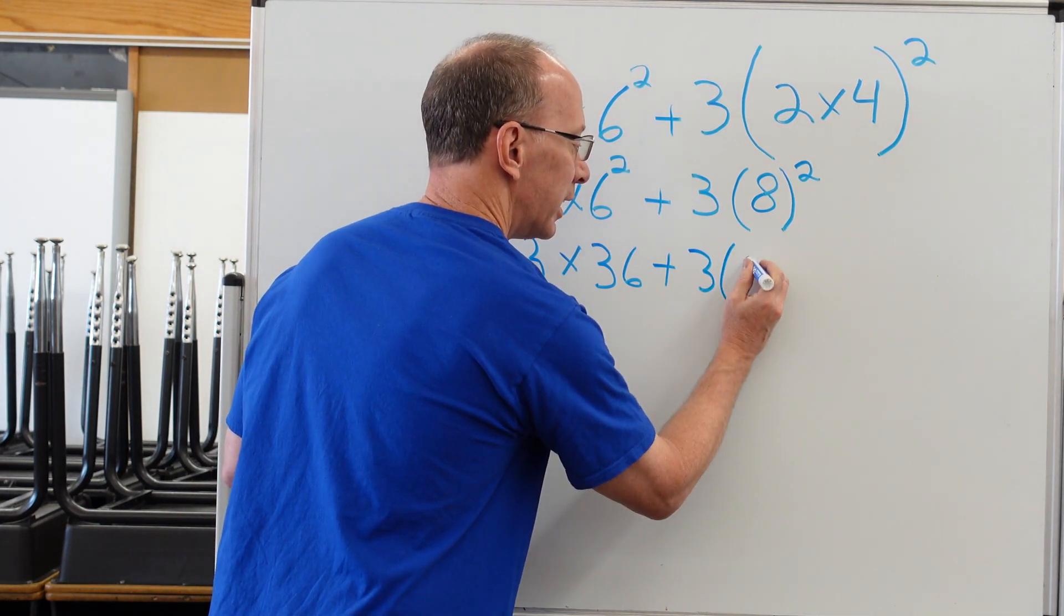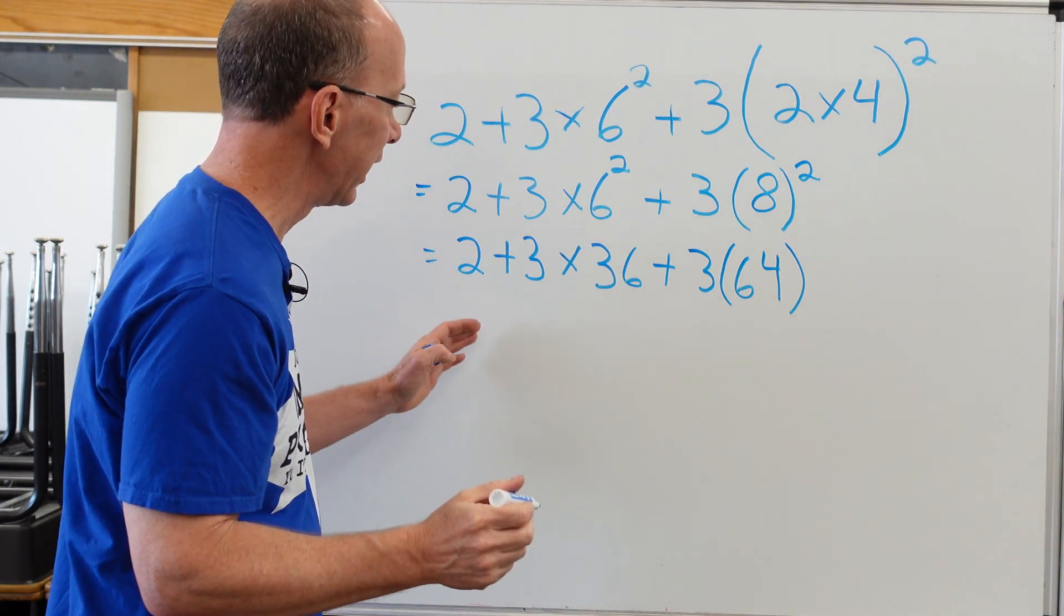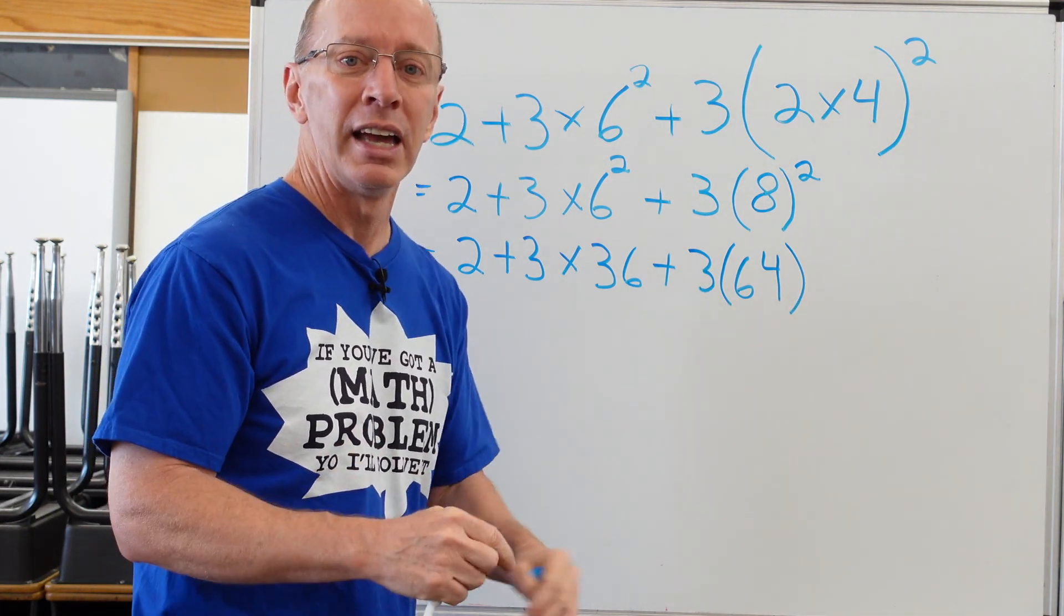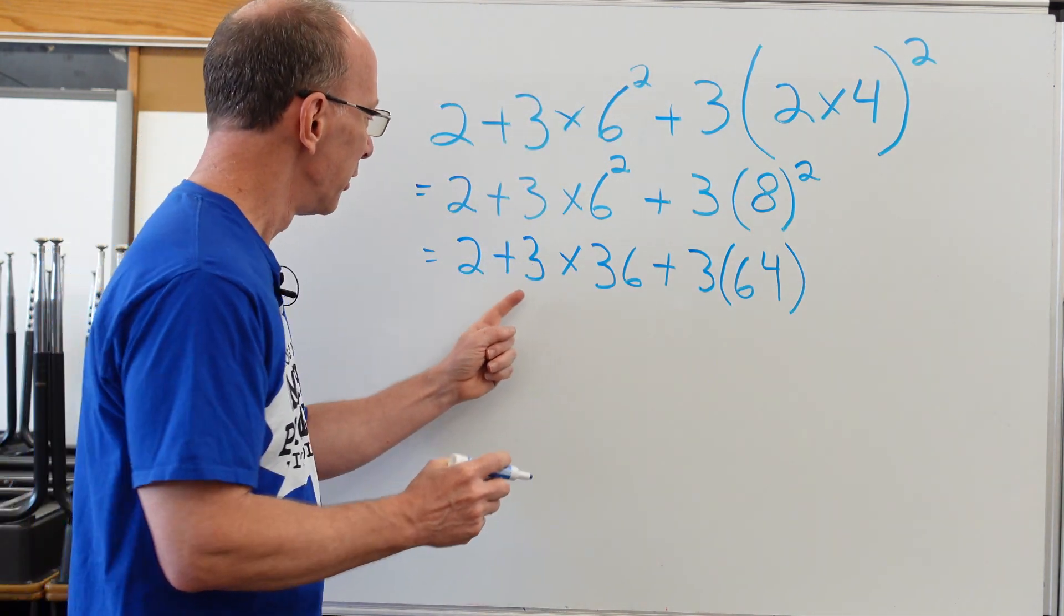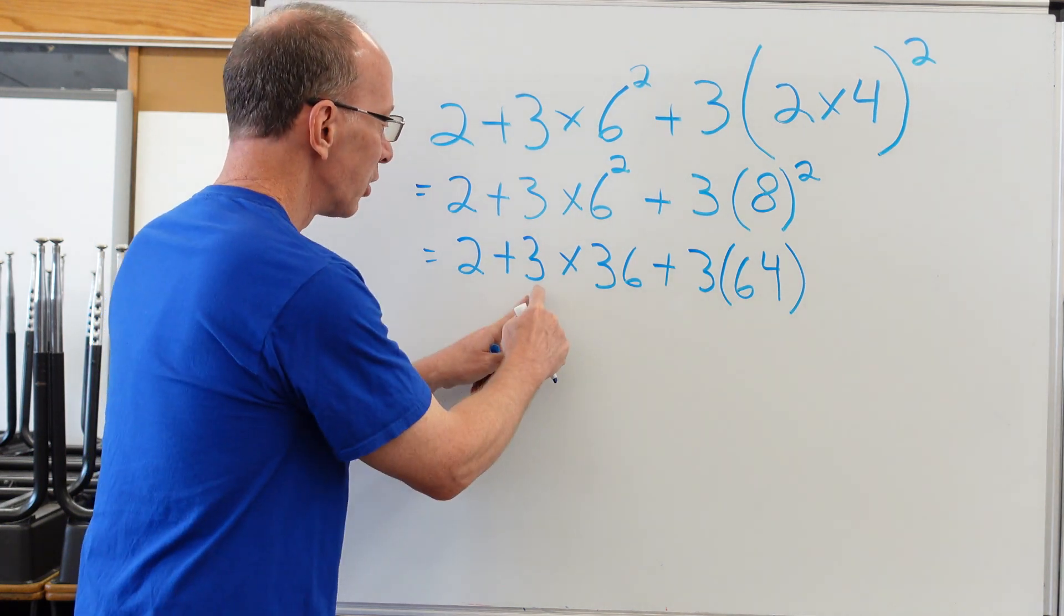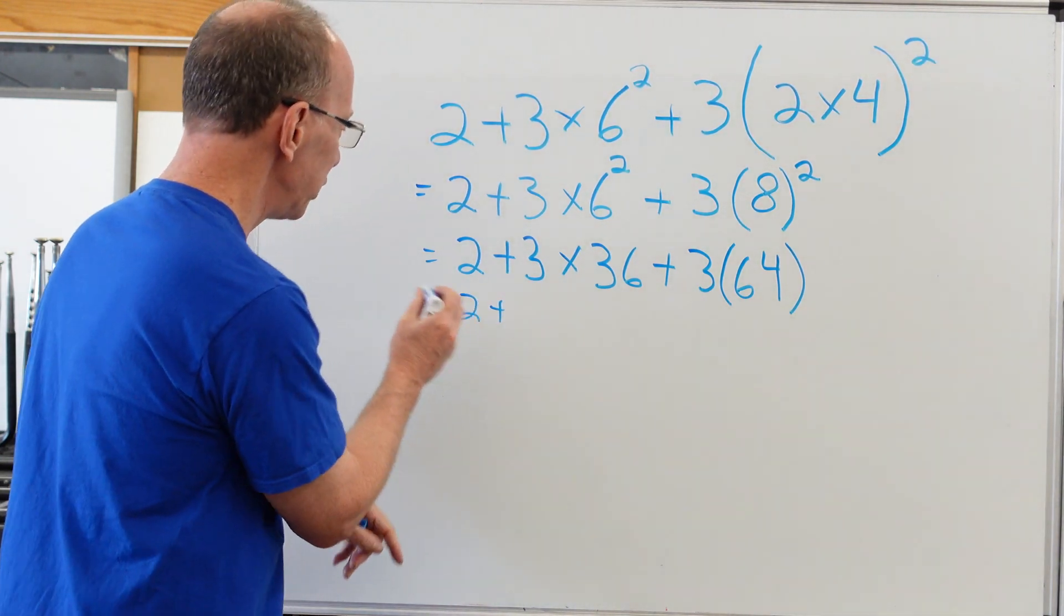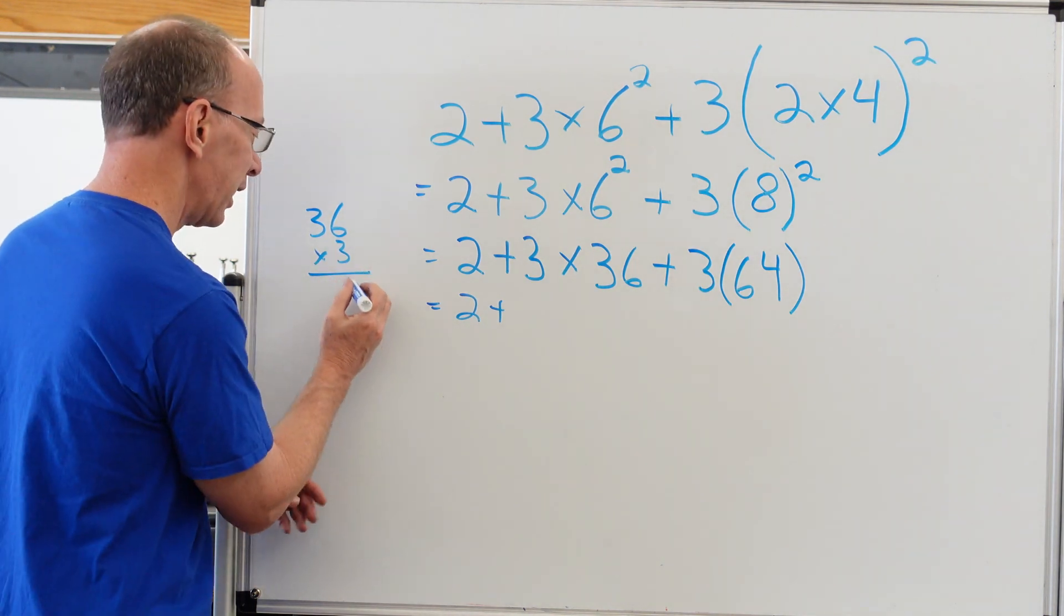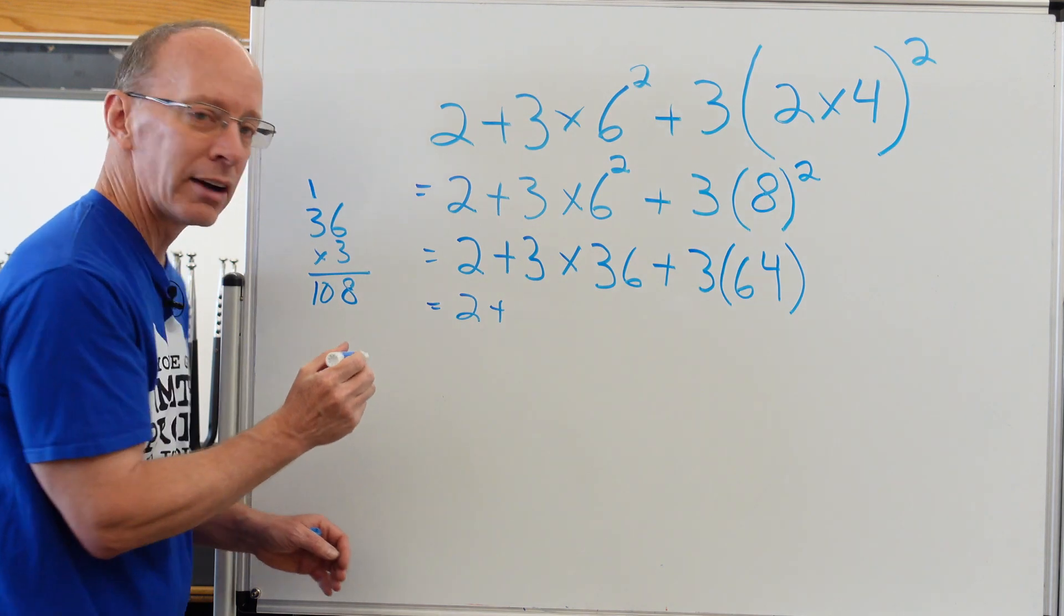Now we don't have any more parentheses or exponents, so let's do multiplication and division from left to right. I know you're tempted to add 2 + 3, but no, you gotta do the multiplication. So 2 + 3 × 36. You can do a little figuring over here: 36 times 3. Six times three is 18, and three times three is nine plus one is ten, so that would be 108.